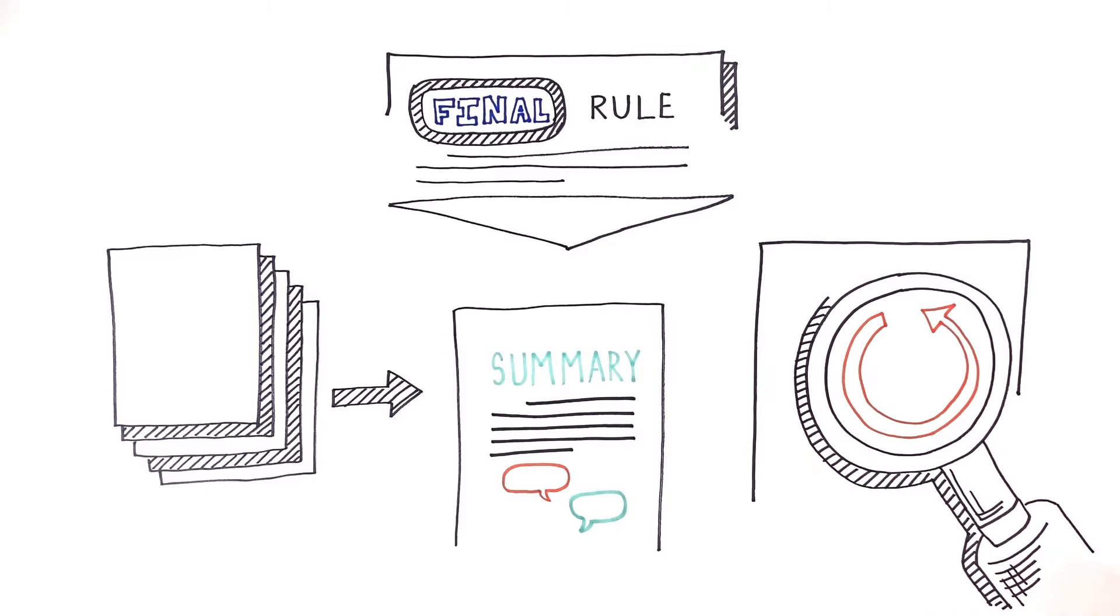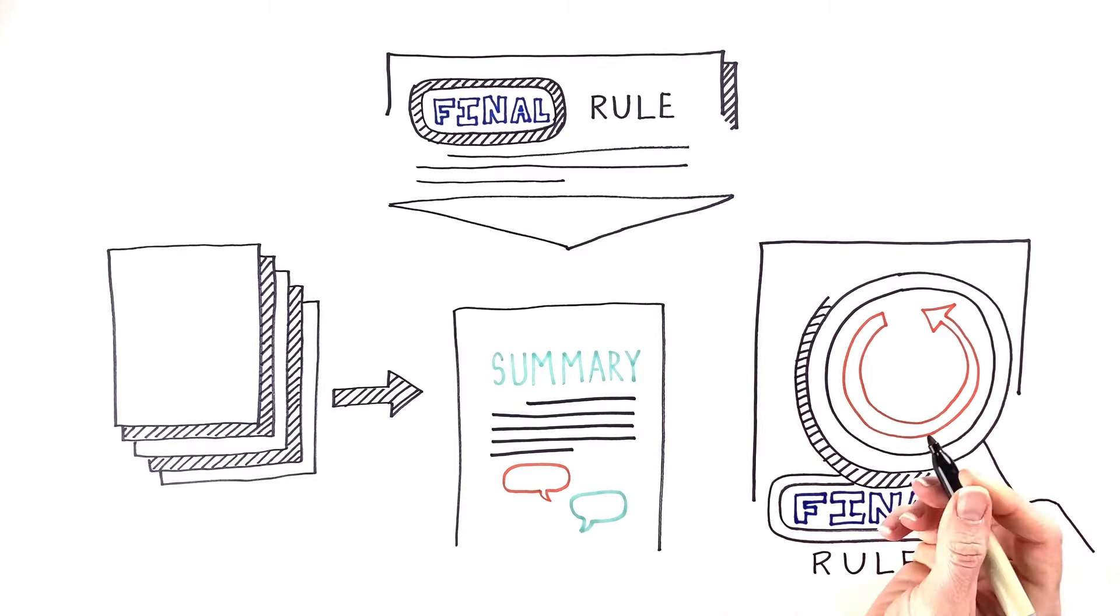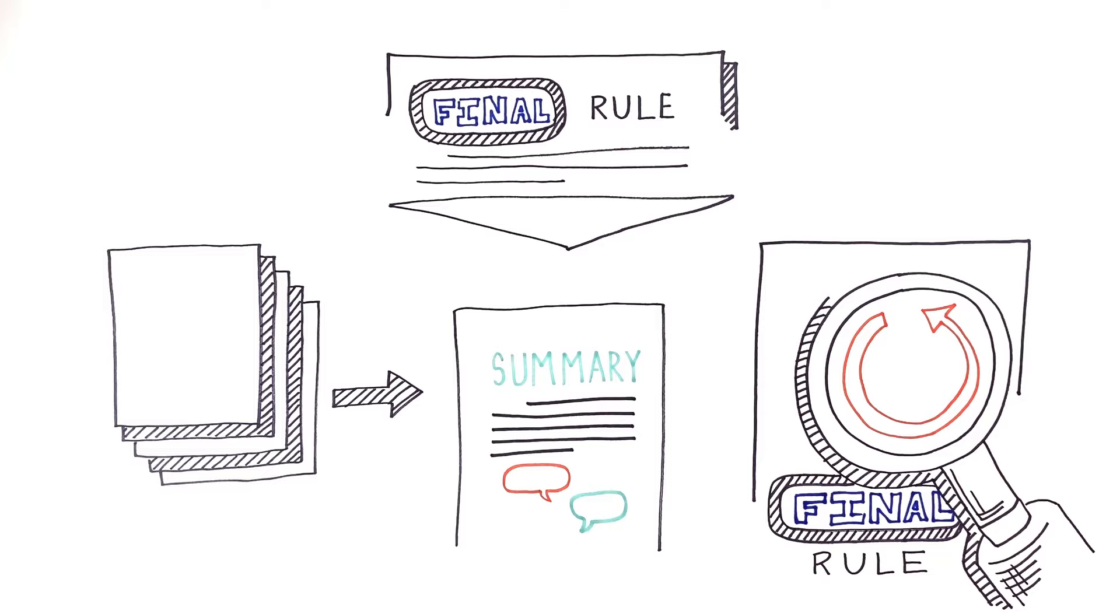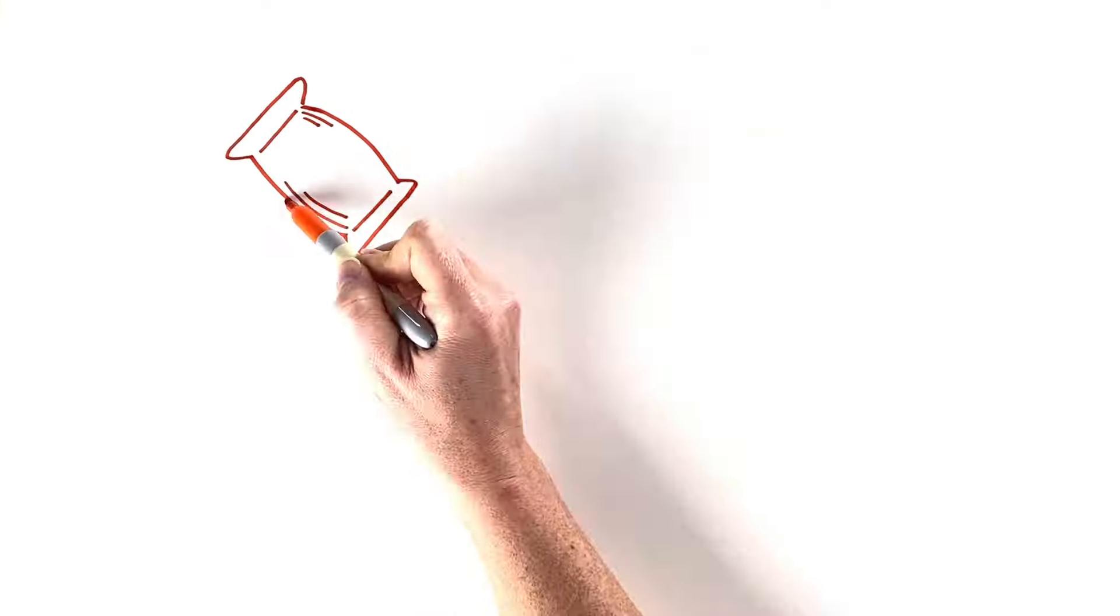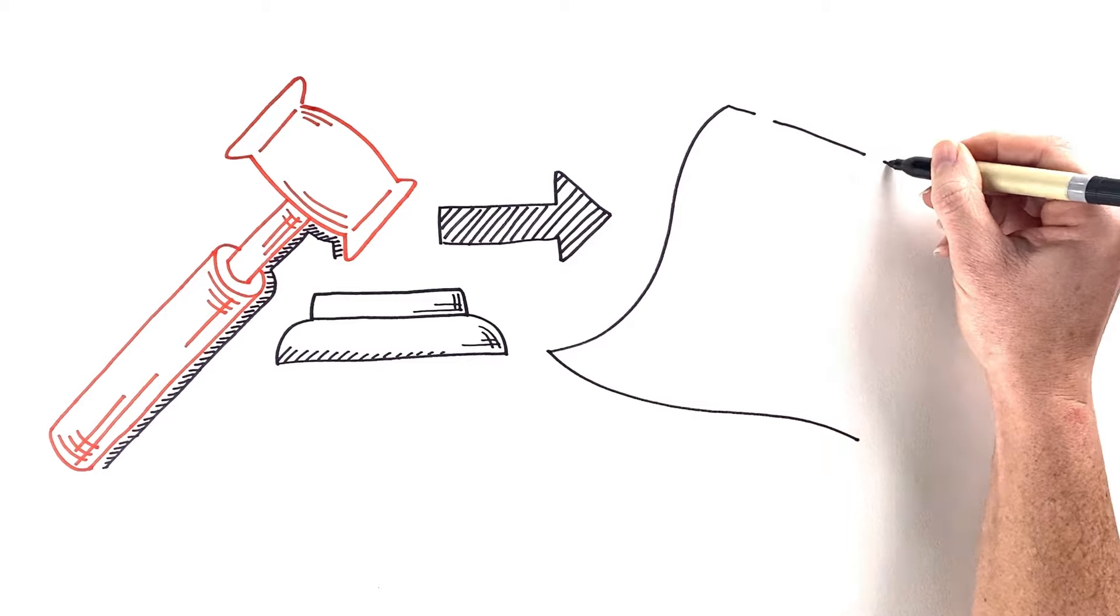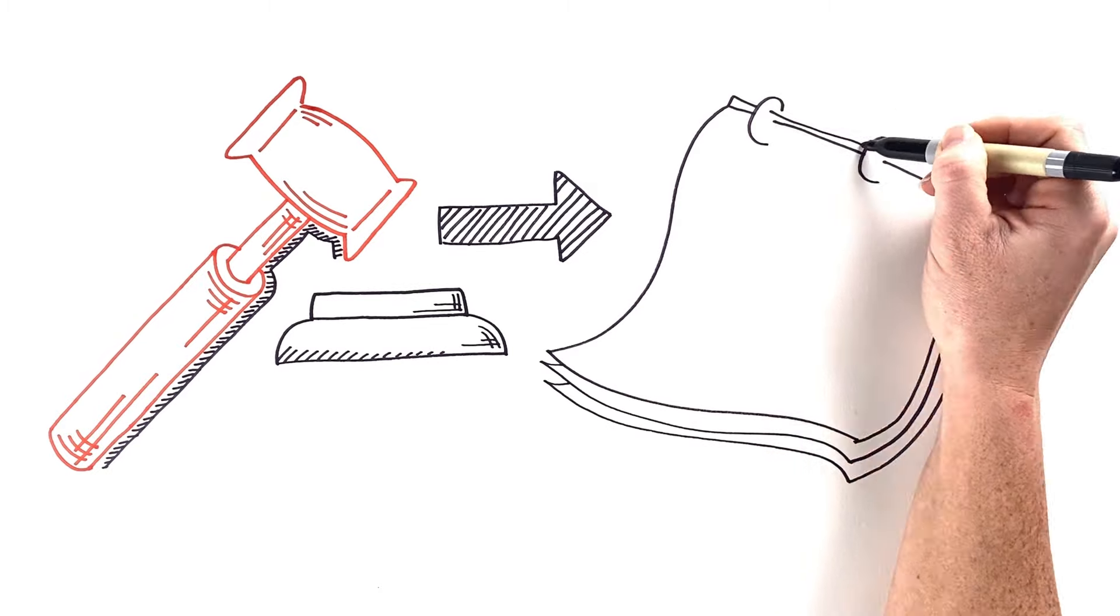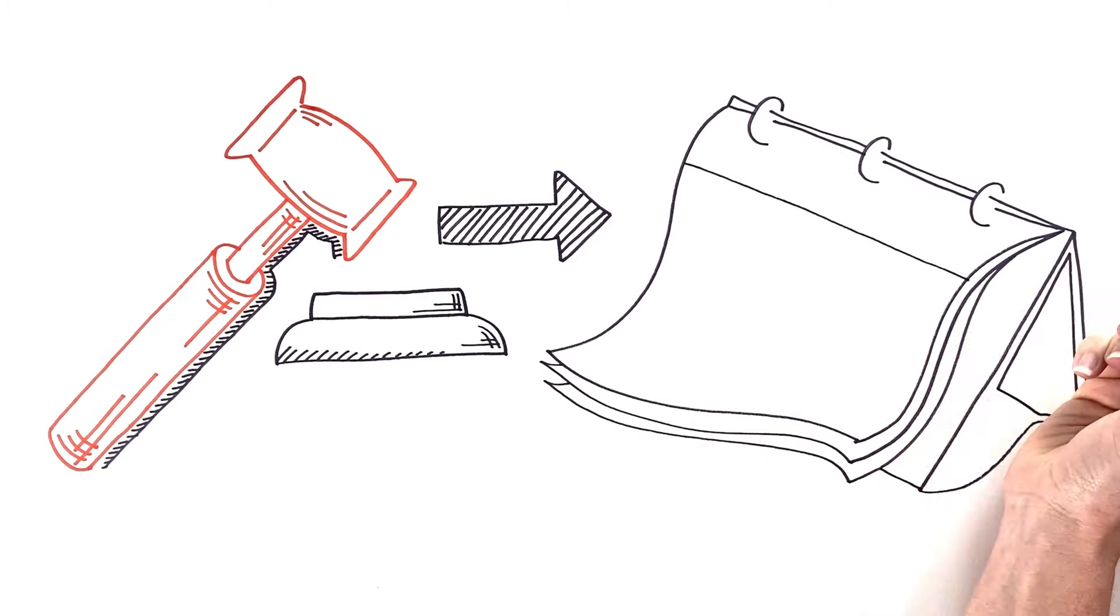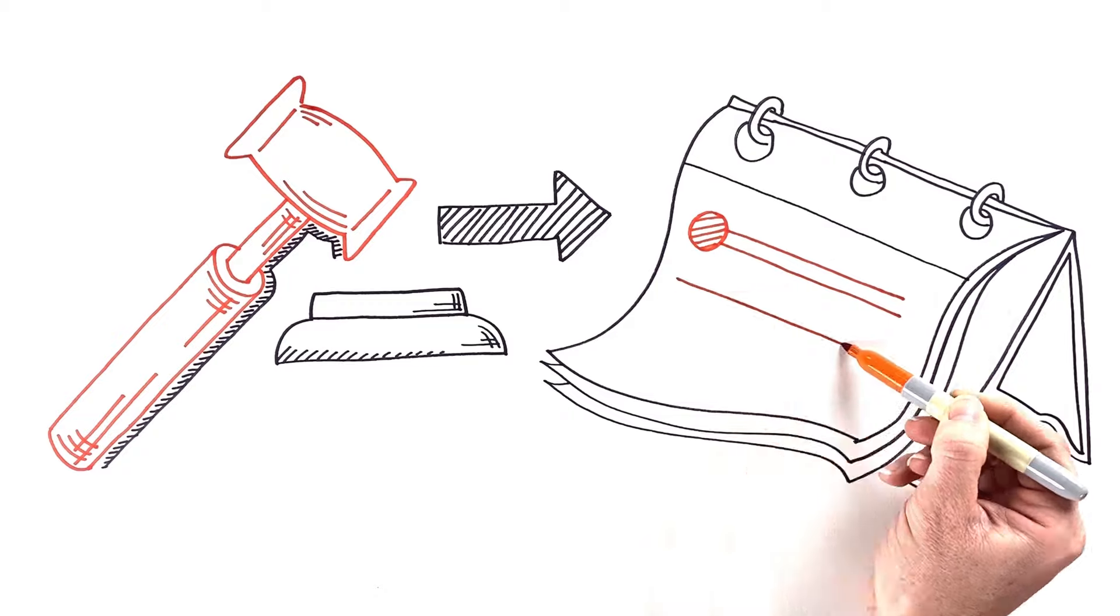The final rule must be reviewed by others in FDA, as well as HHS and OMB, before it can be published. Some final rules take effect right away, but most provide a time period for companies or other affected groups to make the changes needed to follow the rule, such as updating a product's label or training employees.